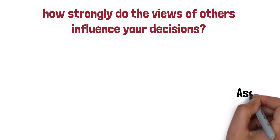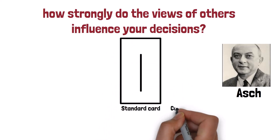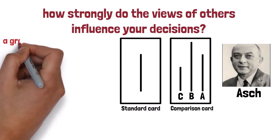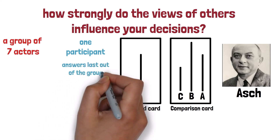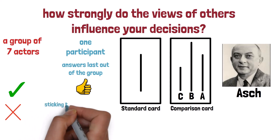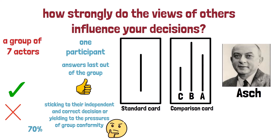Asch conducted a well-known psychology study in 1951 where individuals are shown a line and asked to match its length to three possible other line options — one of which is actually identical. A group of seven actors and one real participant form a group to answer which line is the correct one, with the actual participant always answering last. When the seven actors answer correctly, the participant agrees. However, when they choose the incorrect line, the participant must choose between their own correct judgment and group conformity. At least 70% of participants went along with the incorrect group decision at least once, in direct disregard of their own eyes.